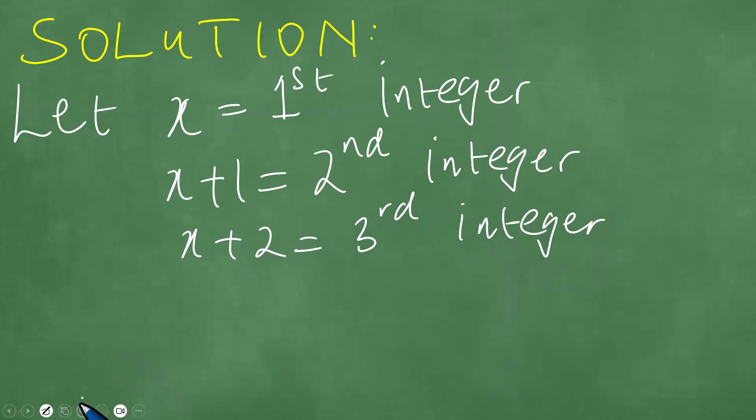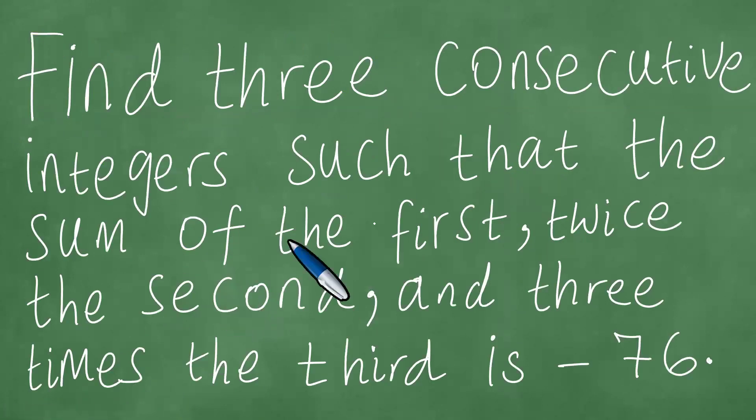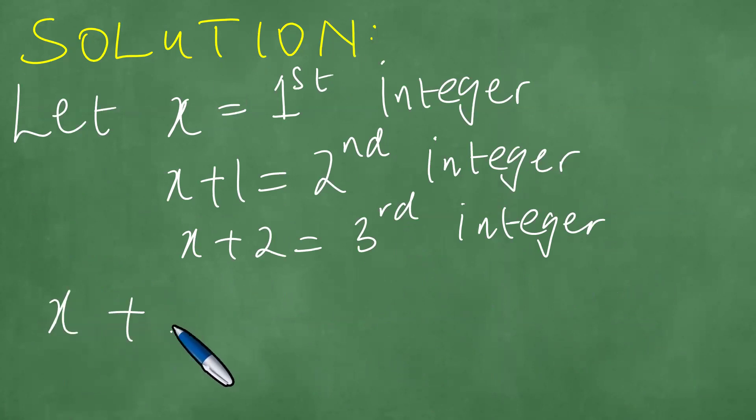Now we add these. The question says we need to find the sum of the first, twice the second, and three times the third is minus 76. So we have x plus two times x plus one plus three times x plus two equals minus 76.